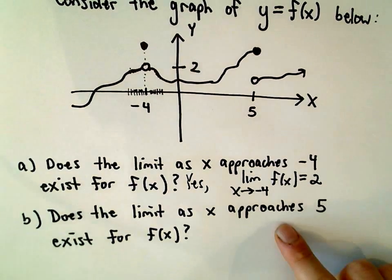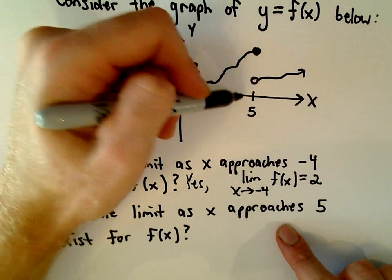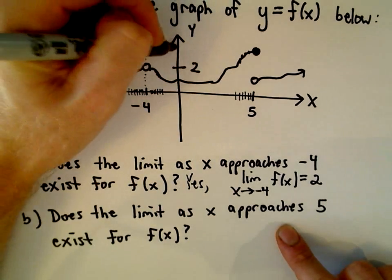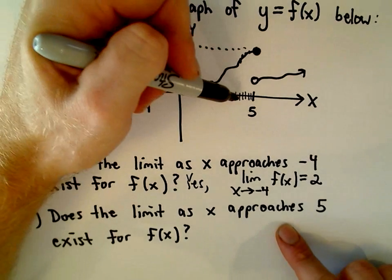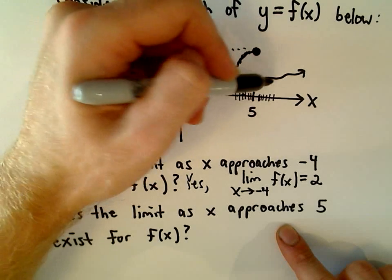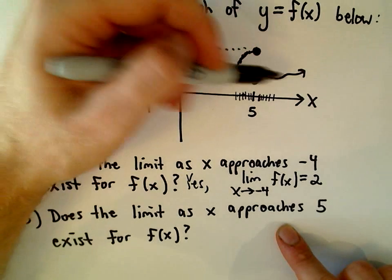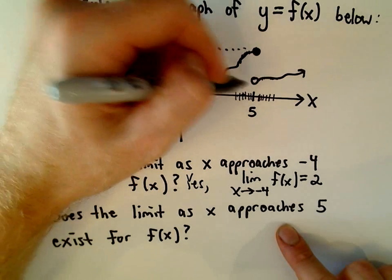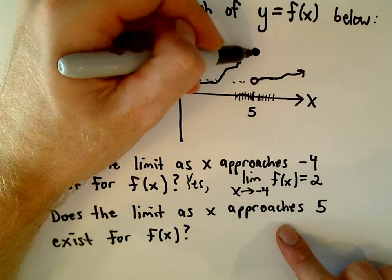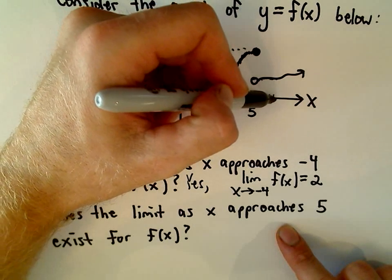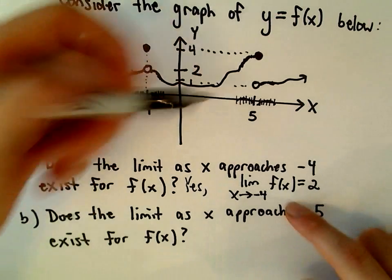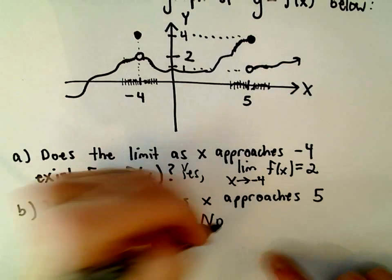Same question: does the limit as x approaches 5 exist for f of x? If I come in from the left, the y values are getting closer and closer to — let's say positive 4, just to give it a specific value. But when we come from the right, if I look at x values a little bit bigger than 5, the y values are getting closer and closer to something different — let's say positive 1. Since the y values from the left get close to 4 and from the right get close to something different, in this case positive 1, the left and right limits are not the same, so we say no, that limit does not exist.